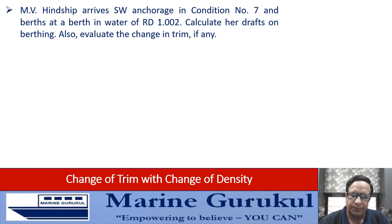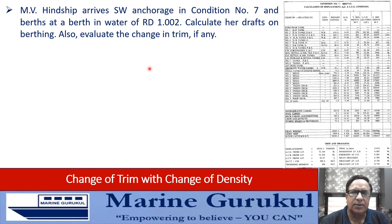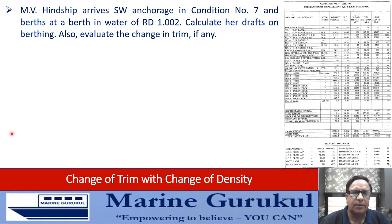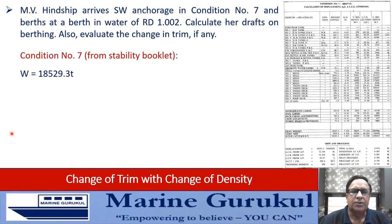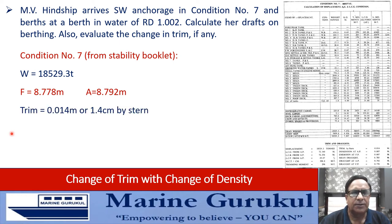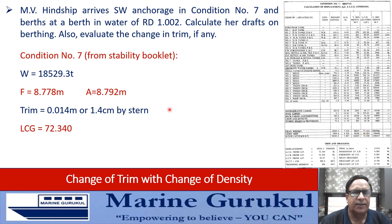From condition number seven in the hydrostatic particulars, we pick up: displacement is 18,529.3 tons, draft forward 8.778 meters, draft aft 8.792 meters, trim 0.014 meters or 1.4 centimeters by stern. LCG of the ship is 72.340 meters. The vessel is floating in sea water. These are the particulars of the vessel in condition number seven when floating in sea water.